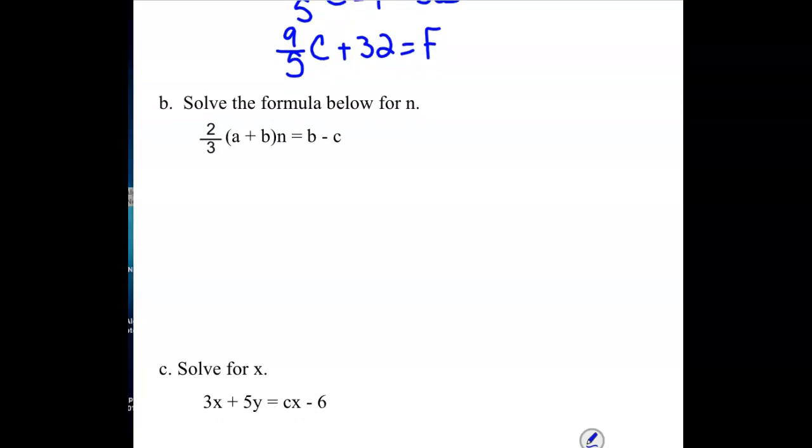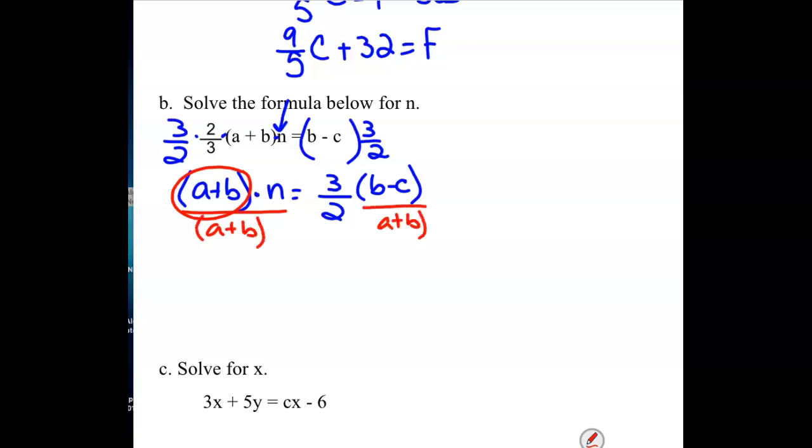Two more questions. We are trying to solve for N. N is right here. I want to get that all by itself. Right now there's a 2 thirds getting multiplied to this group in parentheses, and then that's getting multiplied to N. That means to get rid of all those extra pieces, to get N by itself, I need to divide those out. Instead of dividing by 2 thirds, we're going to multiply by its reciprocal. That's an equivalent operation. So I have A plus B in parentheses times N equals 3 halves times B minus C. And then to get N alone, I'm going to divide this to the other side. So really, I'm just dividing both sides by the quantity A plus B. So my final answer then would be N equals 3 times B minus C divided by 2 times A plus B. So I have that equation now solved for N.